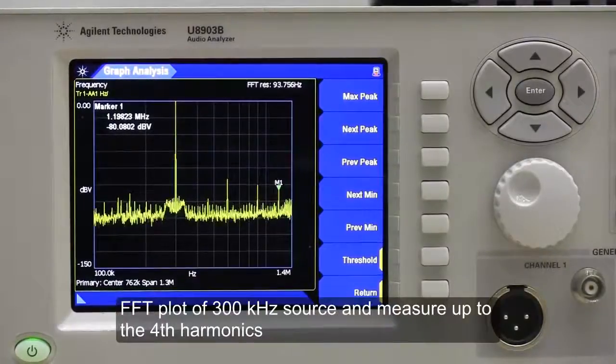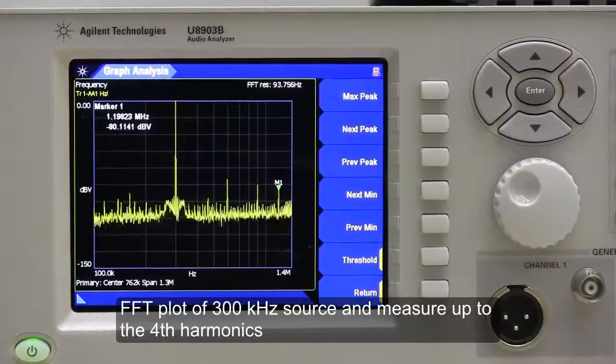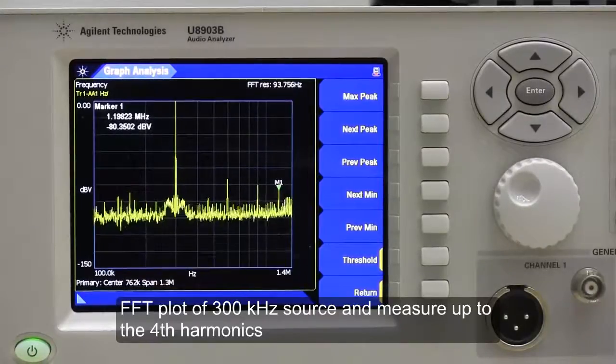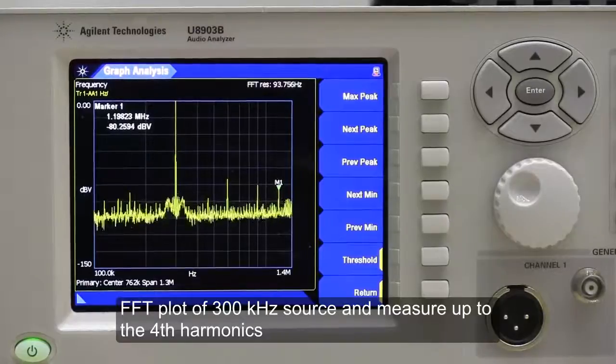This screenshot shows an FFT plot of a 300 kHz source and the U8903B's unique ability to measure up to 4th harmonics.